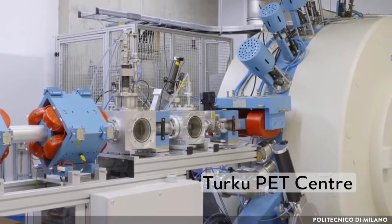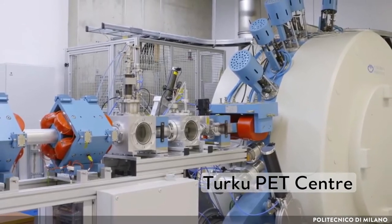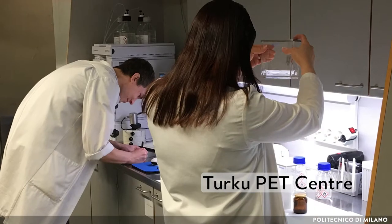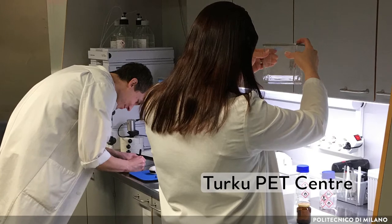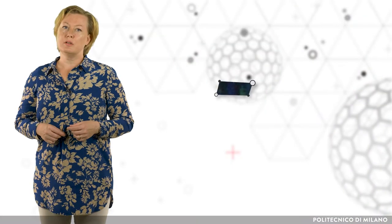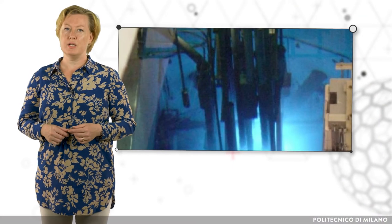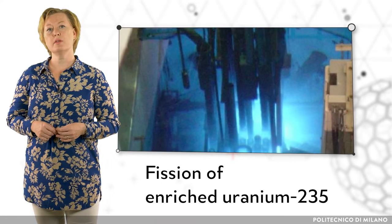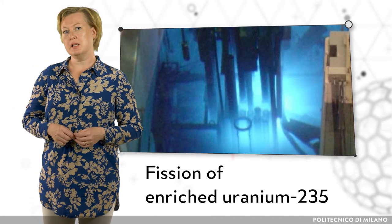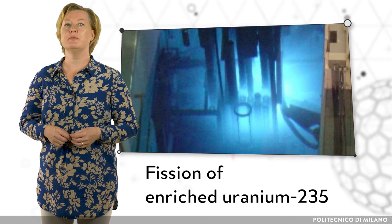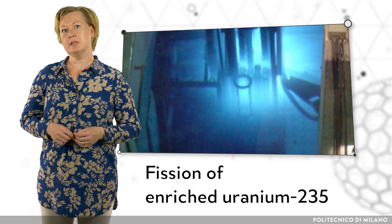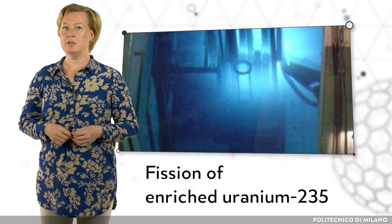Depending on the radioisotope, it can be prepared using particle accelerators such as cyclotrons or nuclear reactors. Cyclotrons are used to generate radioisotopes like gallium-67, fluorine-18, and indium-111. Nuclear reactors produce a whole range of radioisotopes from the fission of enriched uranium-235. Many of these radioisotopes, such as molybdenum-99, cobalt-60, and iodine-125, are very important radioisotopes in nuclear medicine and are separated out from the radionuclide mixture using physico-chemical methods.